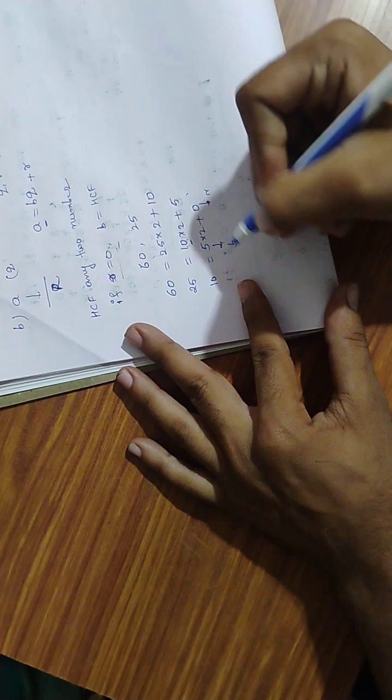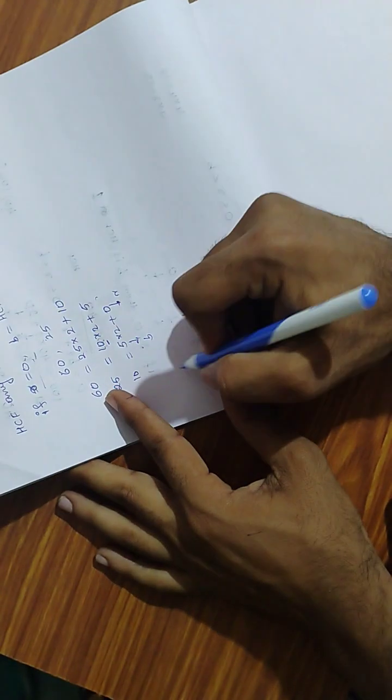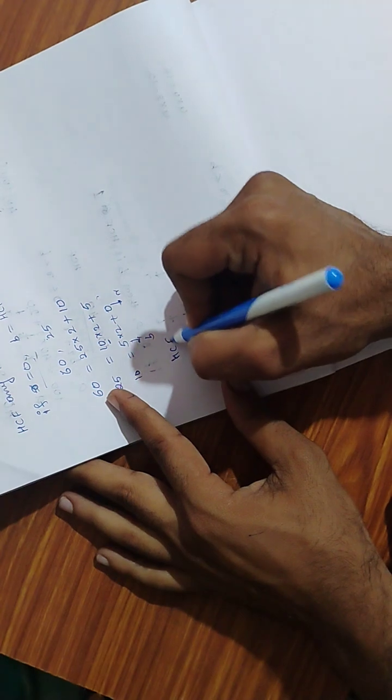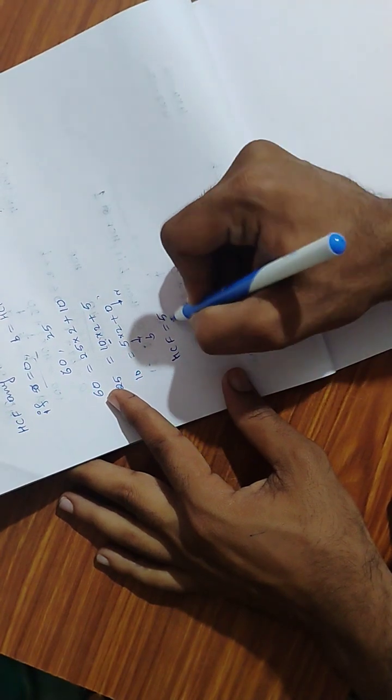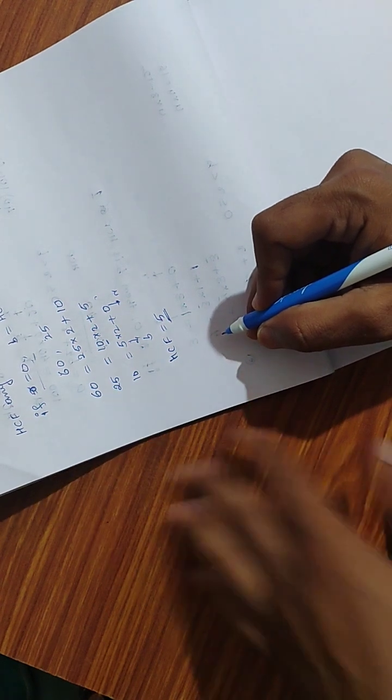Now the remainder is 0, so B is your HCF. If remainder is 0, your HCF is 5. Understand? Thank you.